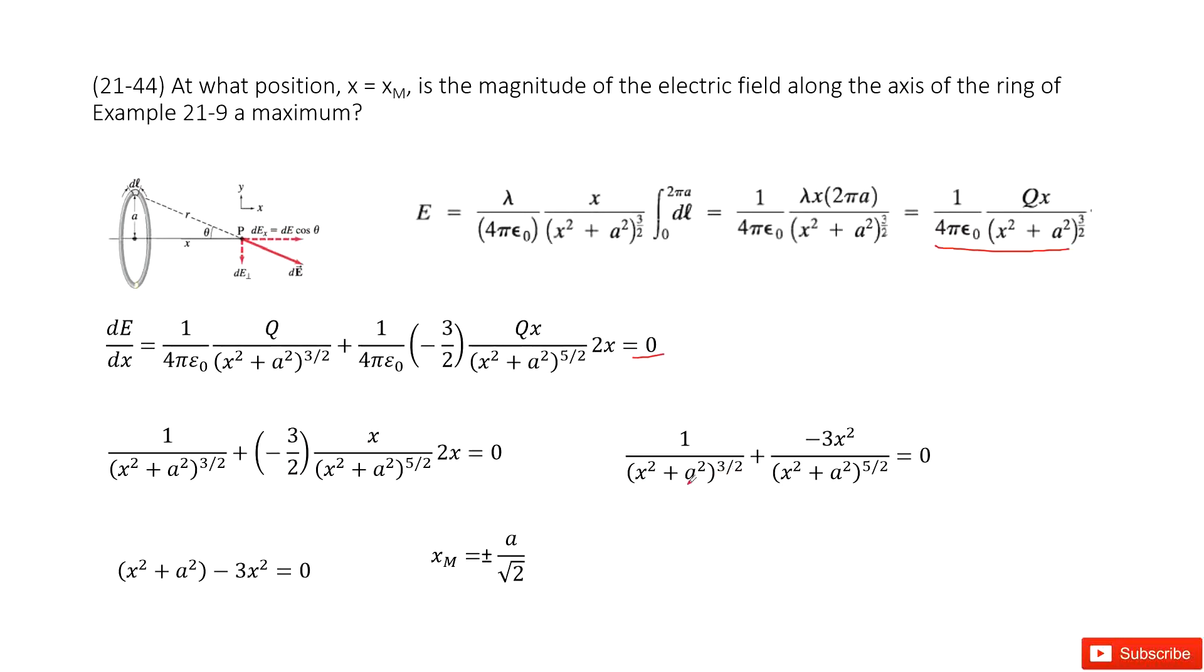And then we simplify it. It looks like this one, right? And then solve it. We can get at this position, the maximum position is just positive or negative a over square root 2. Thank you.